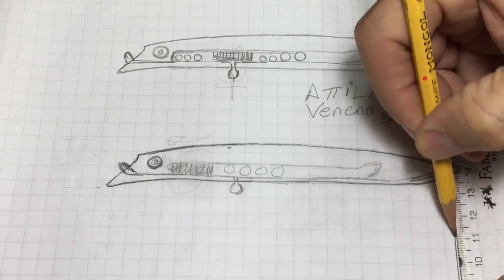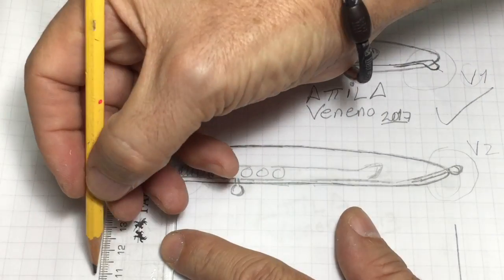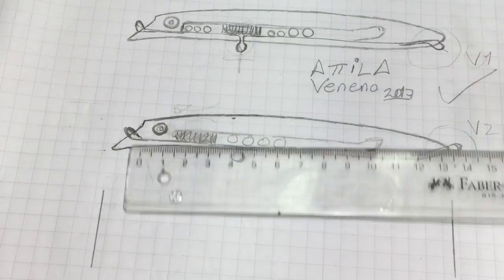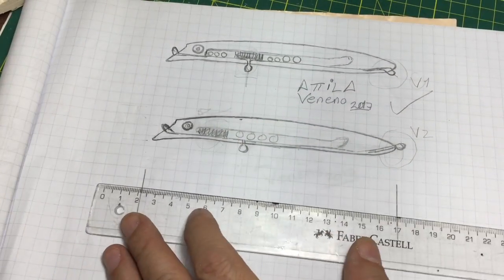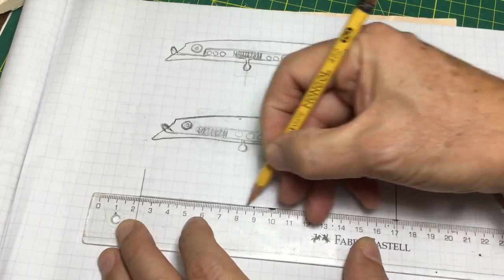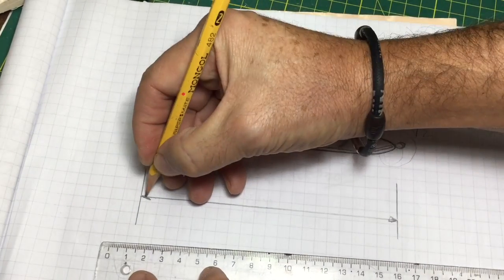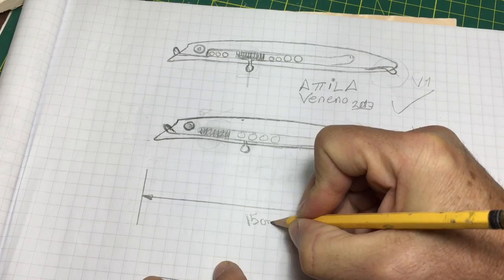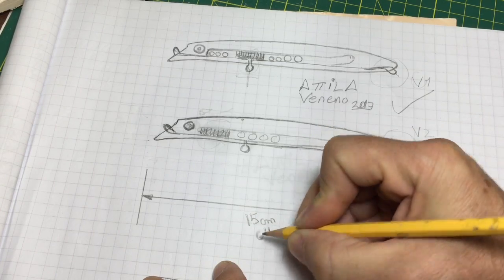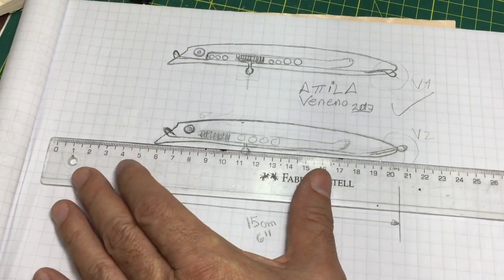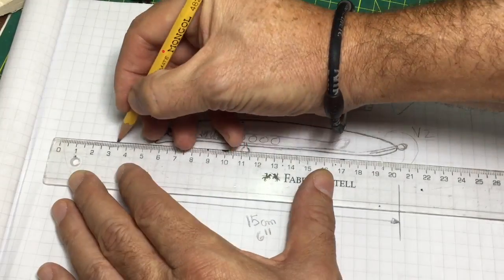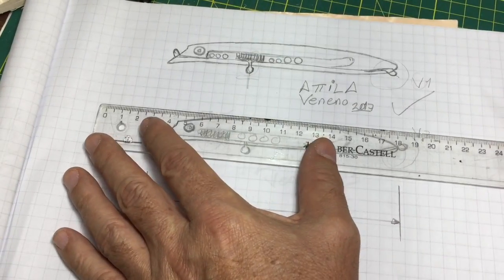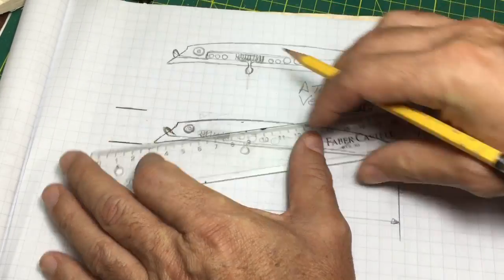Once ready, the next step was to take measurements. So I take a ruler to have length, width and some other details. The total length of this lure is 15 cm or 6 inches.